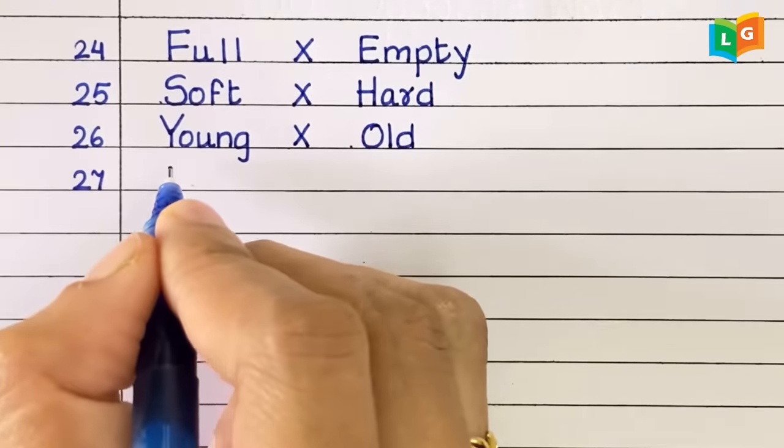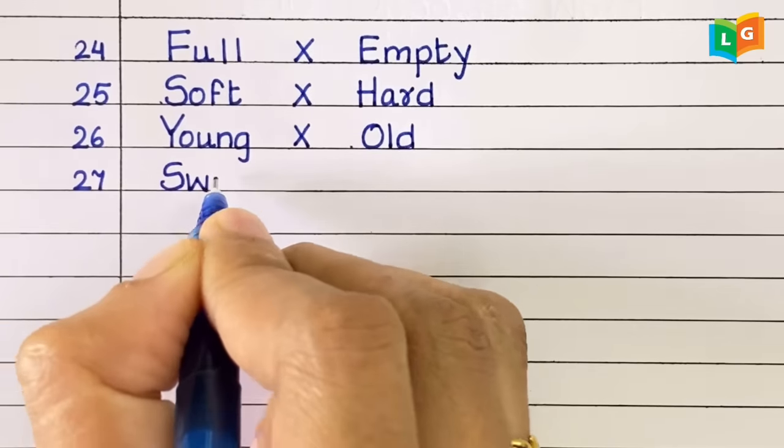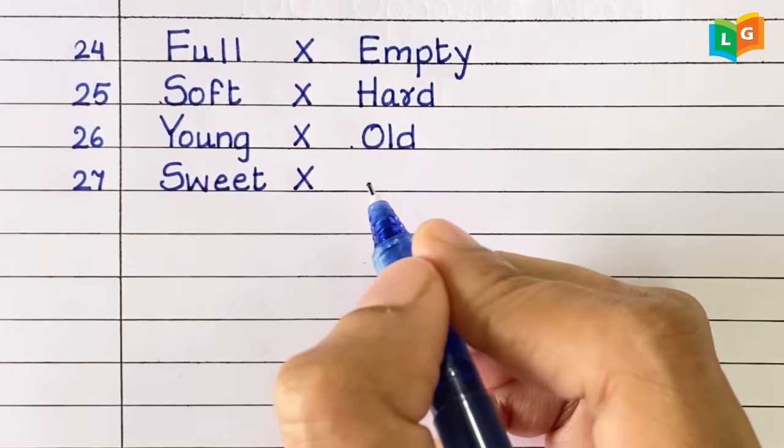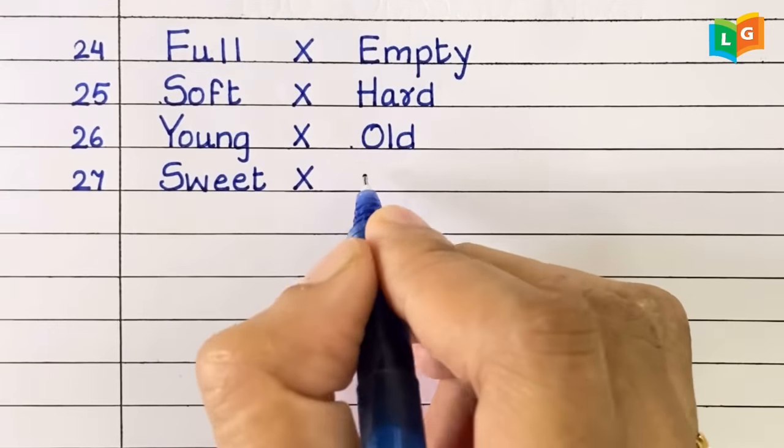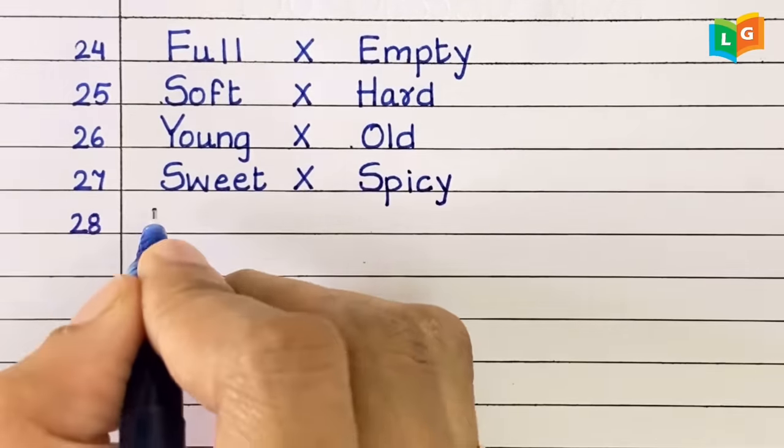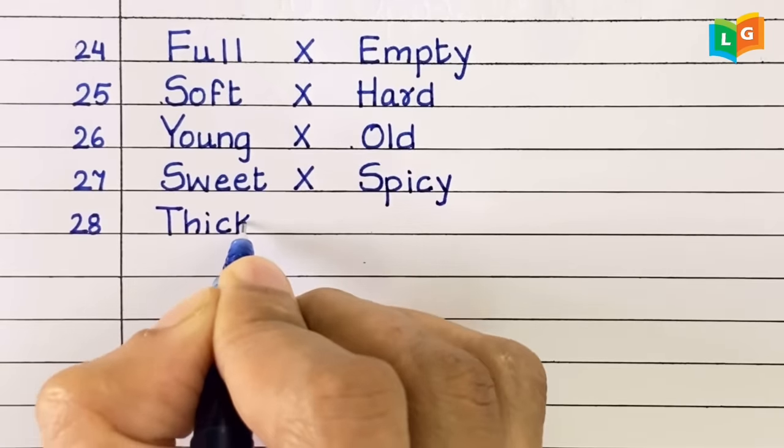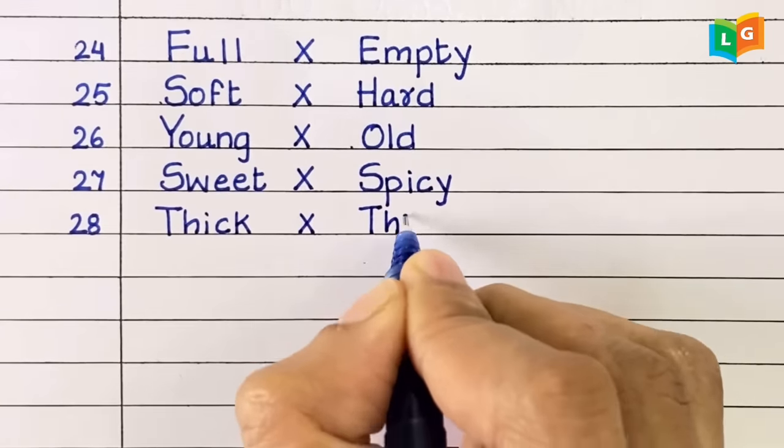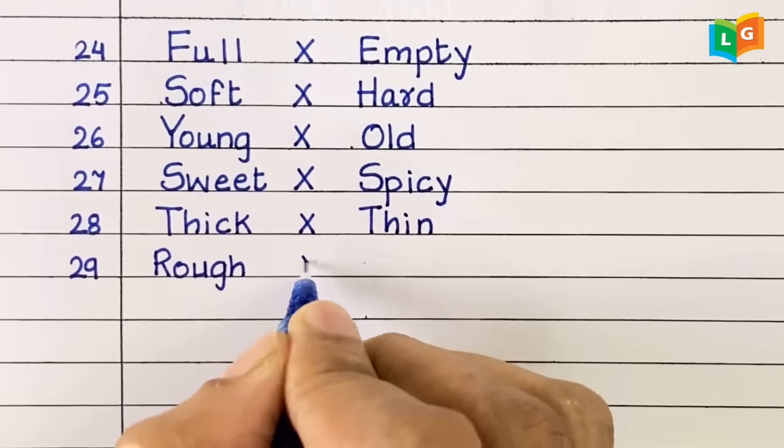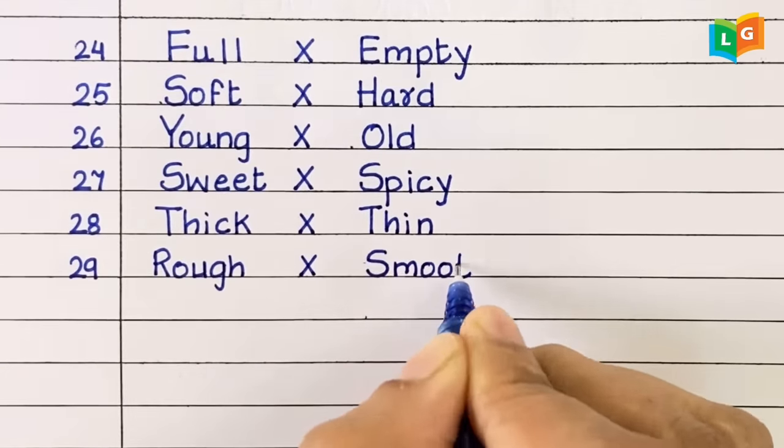Twenty-seven, sweet, spicy. Twenty-eight, thick, thin. Twenty-nine, rough, smooth.